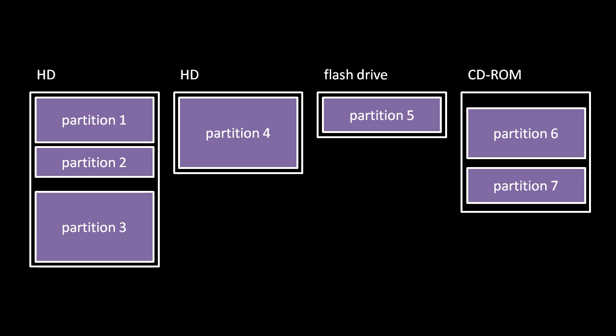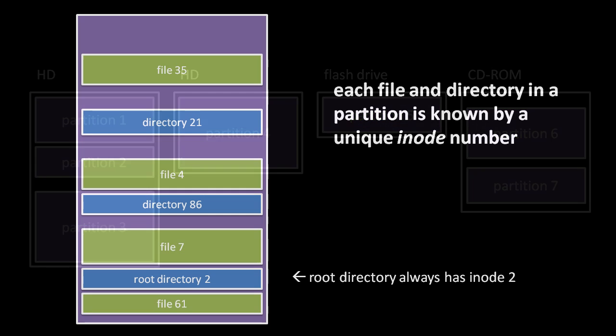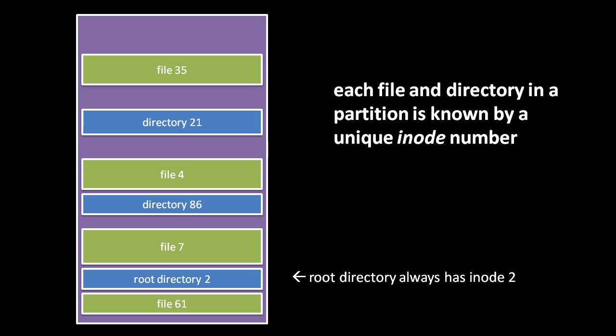Each storage device is divided into possibly one or more partitions. It's within these partitions that files and directories are stored, and within each partition each file and directory is known by what's called an inode number — a number that uniquely identifies a file or directory within that partition. Always within a partition, you have at least one directory called the root directory, designated inode 2. Inode 1 is used for a list that keeps track of all the bad sections in the partition, and inode 0 is used like a null pointer, indicating the absence of any file or directory.